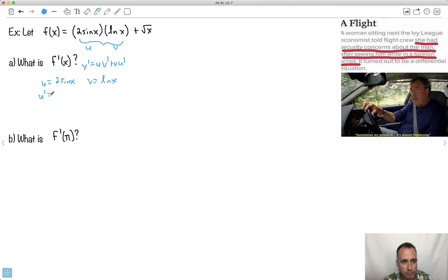So I'm going to say then that y primed will be u v primed plus v u primed. I'm just doing this first part. Don't forget about the plus root x here. So u is 2sin(x), v is ln(x). What's u prime? Well, derivative of sine is just cos, so 2cos(x). v prime, the derivative of ln(x) is 1/x. Then I put them all together.